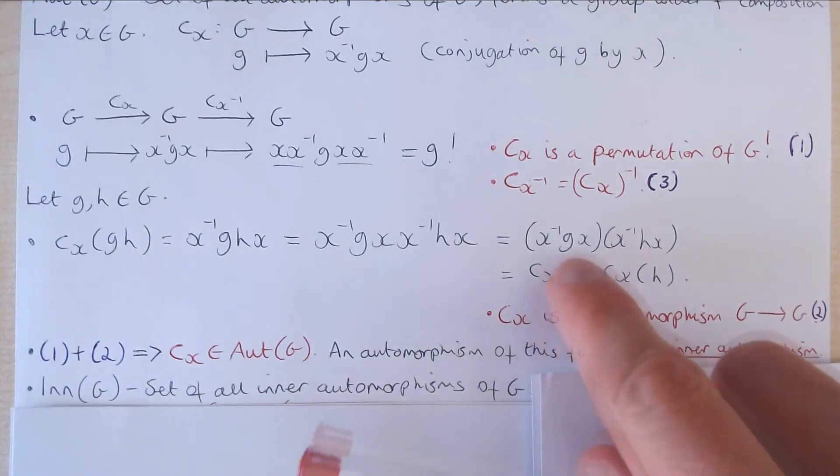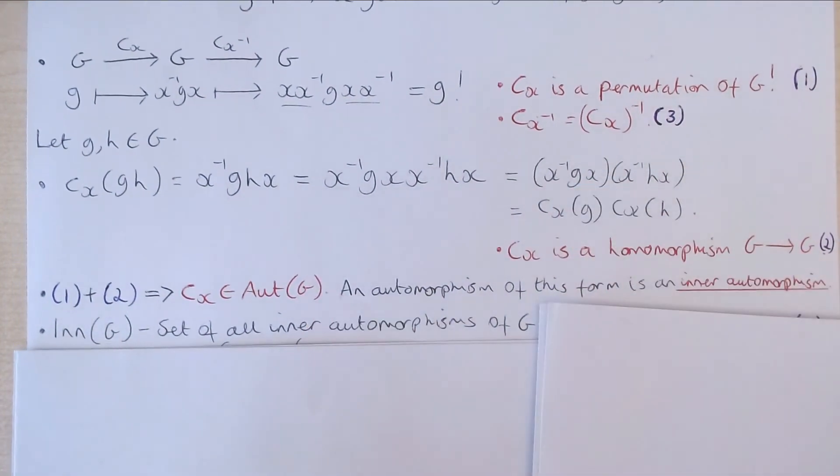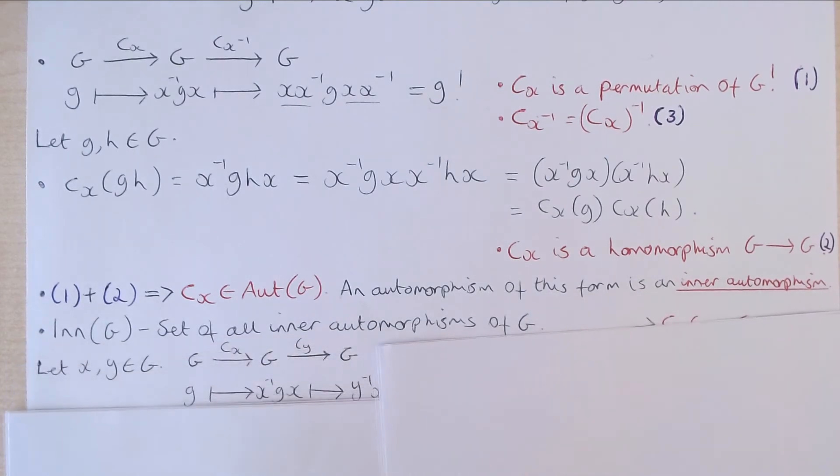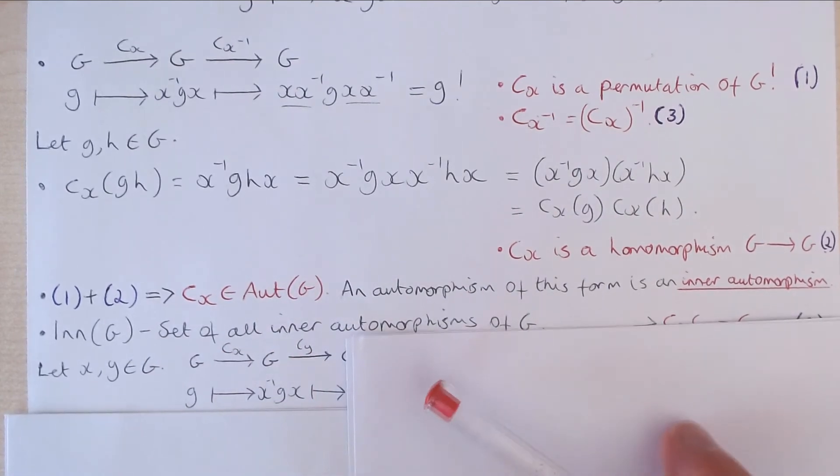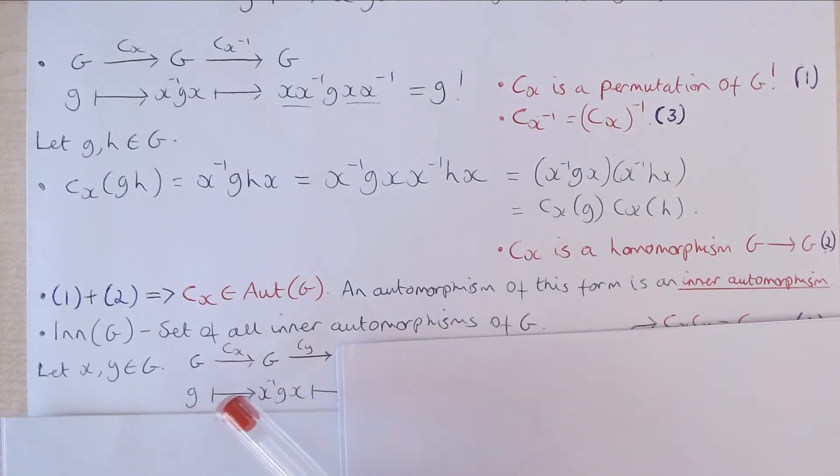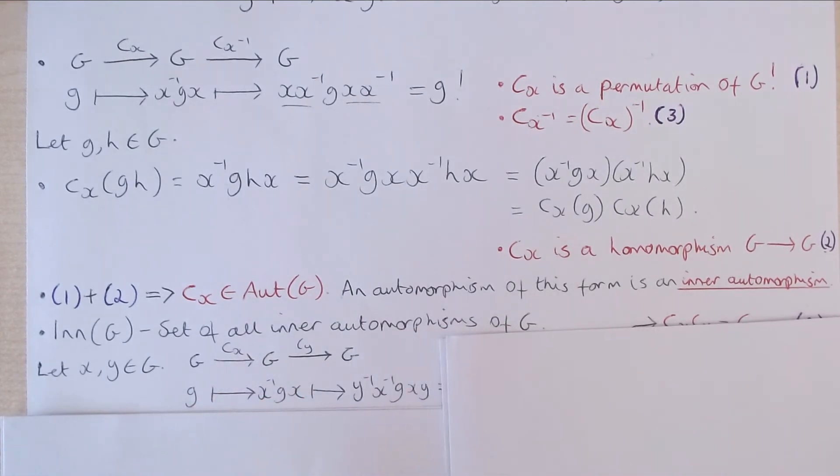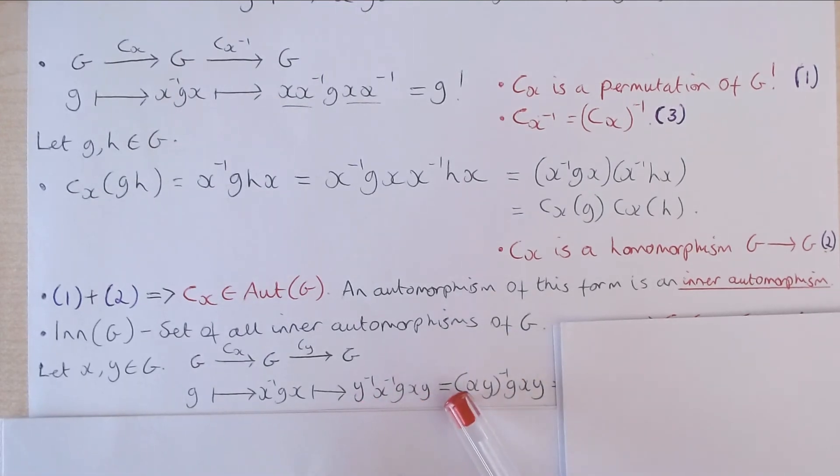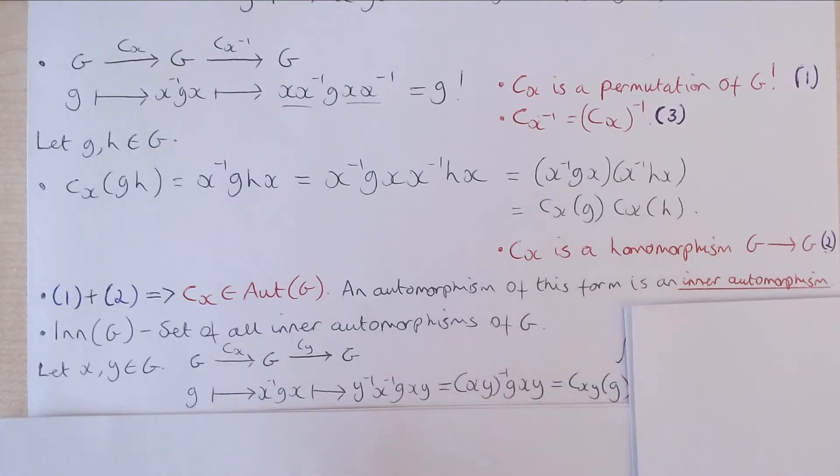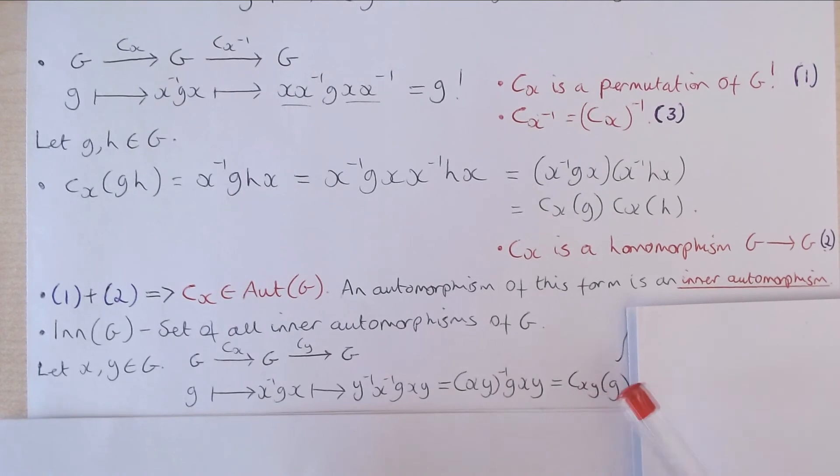What happens if we compose two of these inner automorphisms? Well, let X and Y be elements of our group G and then the composition CX and CY gives us: the element G is sent to X inverse GX and then that element gets sent to Y inverse X inverse GXY. Now we note that Y inverse X inverse just equals XY inverse. So this expression equals XY inverse G times XY and that simply equals C of XY applied to G.